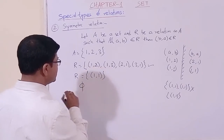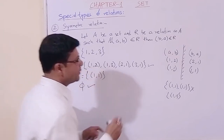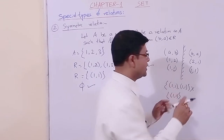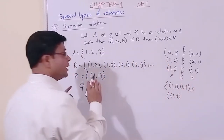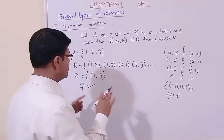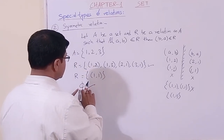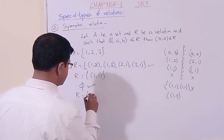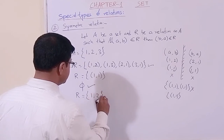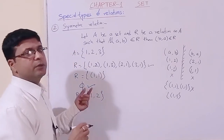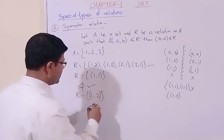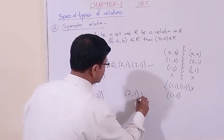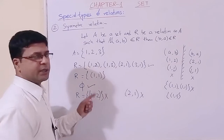The null relation is also a symmetric relation. What is null relation? Nothing is there, no element is there. On that logic, we can consider that phi, the null relation, is a symmetric relation. However, consider the relation containing only (1,2). Is it symmetric? No, it is not a symmetric relation, because (2,1) is not present.